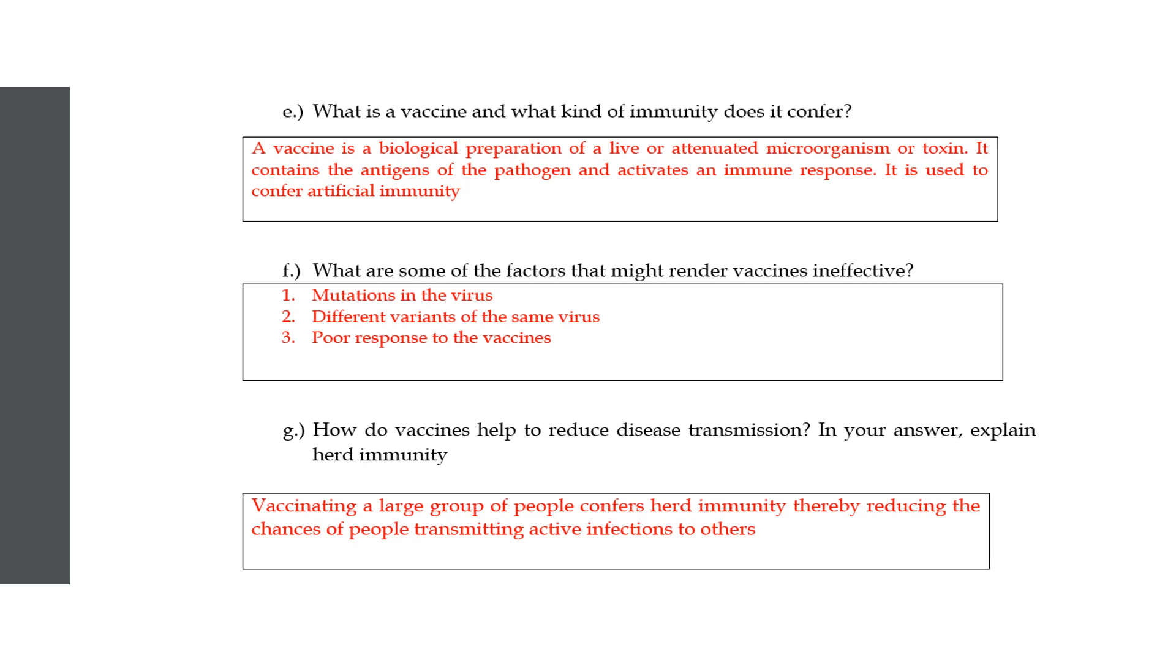Some factors that might render vaccines ineffective are if there's a mutation in the virus. Let's say after you make the vaccine the virus mutates, then you've got to make another vaccine because the virus has changed. There are different variants of the same pathogen, so there are five different types and they all act differently, so you need to make different vaccines to cover all of them. Sometimes people have poor responses to vaccines. Vaccines are not always 100% as you might have noticed with COVID. Some people respond poorly and they can have terrible side effects or they might just not be effective.